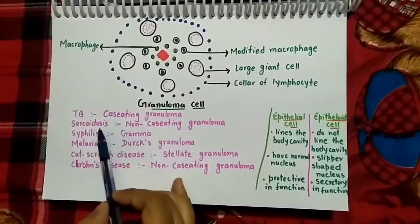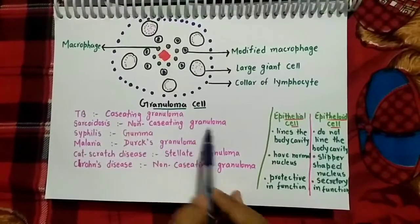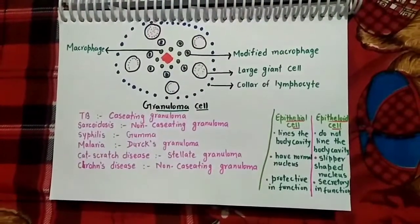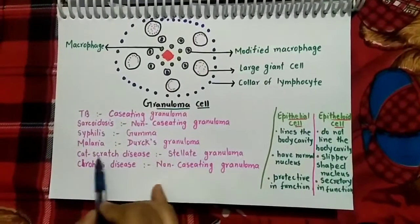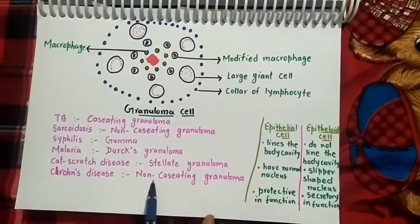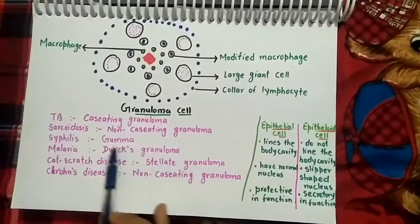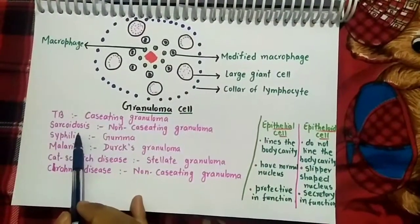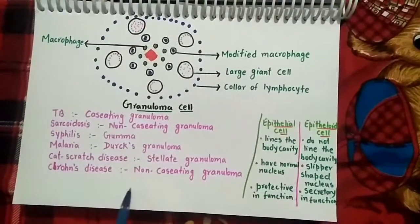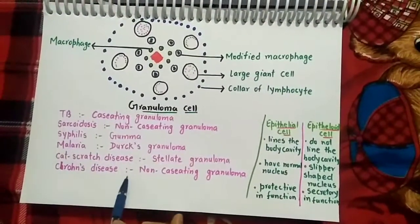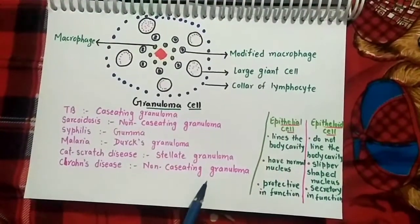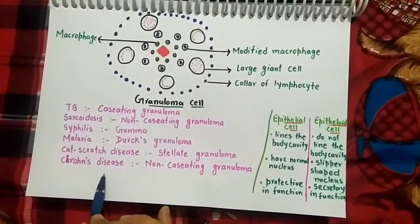Granulomas are present in various diseases: caseating granuloma in tuberculosis; non-caseating granuloma in sarcoidosis; gumma in syphilis; Durck's granuloma in malaria; stellate granuloma in cat scratch disease; and non-caseating granuloma in Crohn's disease. Note that non-caseating granuloma occurs only in sarcoidosis and Crohn's disease. Crohn's disease is a type of inflammatory bowel disease, and granuloma formation differentiates it from ulcerative colitis.